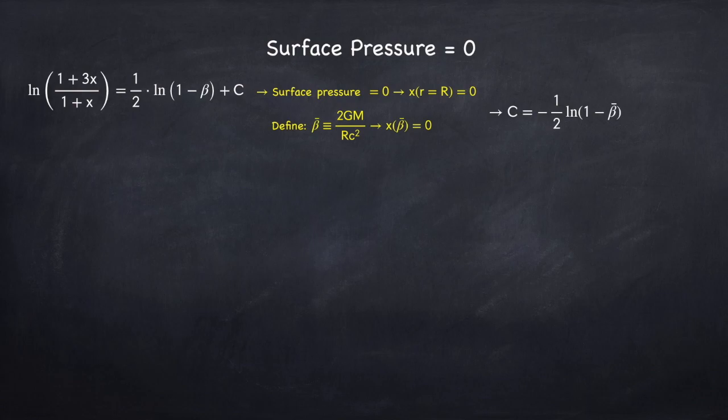Plugging this in, we find that c equals negative one half ln of one minus beta bar. To find this, all I did was plug in zero here. And so I have ln of one over one, so that's ln of one is zero. And then ln of one minus beta bar plus c, that's got to equal zero. So c is the negative of this quantity evaluated at beta bar.